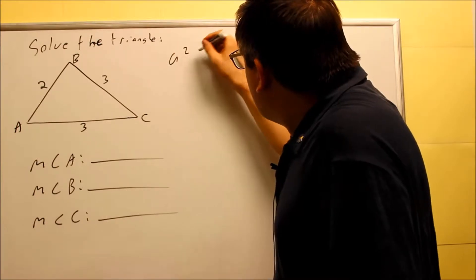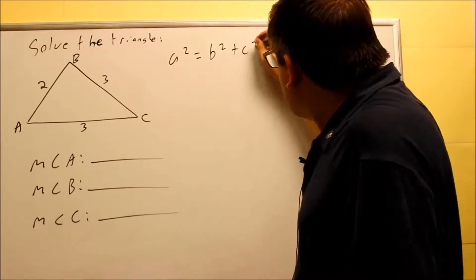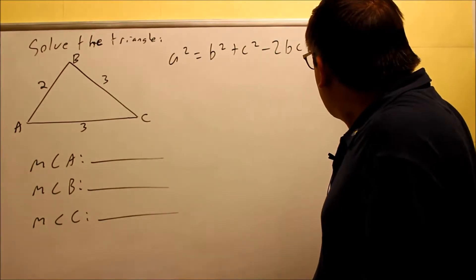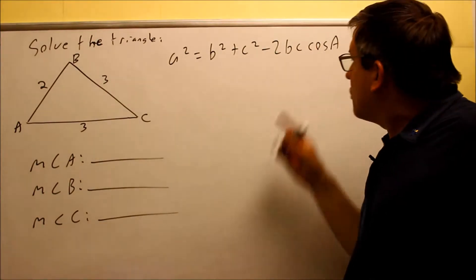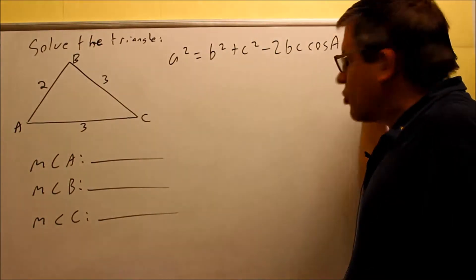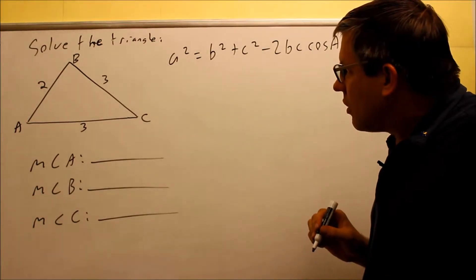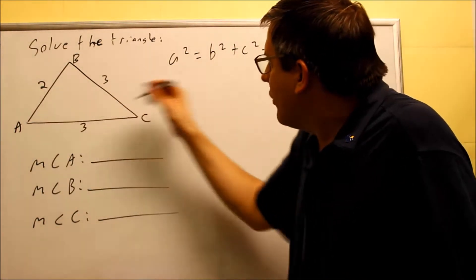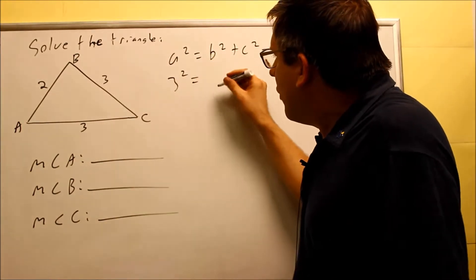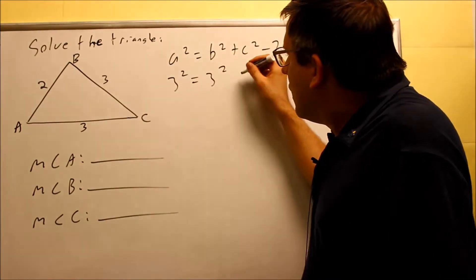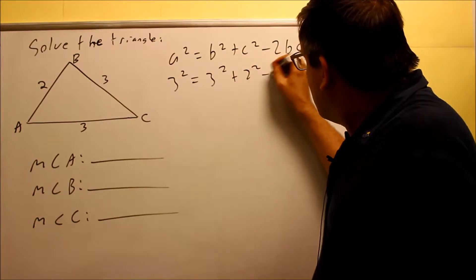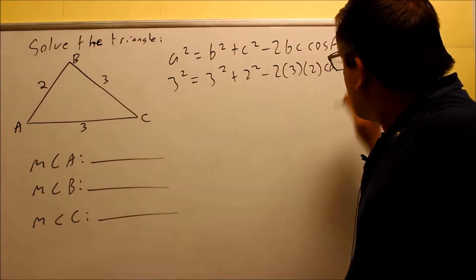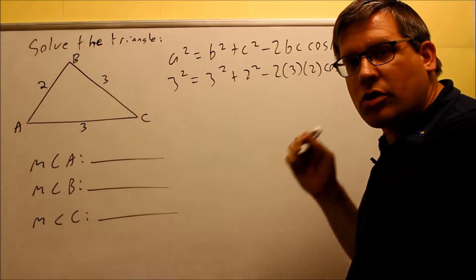So I'm going to use: a² = b² + c² − 2bc·cos(A). That's the version I want because it has angle A that I'm trying to solve for. Now I'll put in the given information: a, the side opposite A, is 3, so 3 squared. B is also 3, and c is going to be 2. Then I have 2 times 3 times 2 here, and cosine A is what I'm solving for.